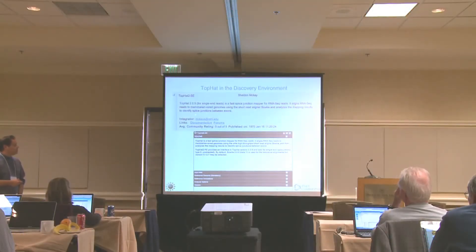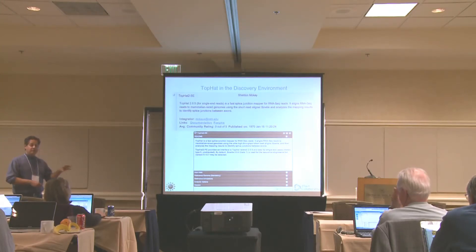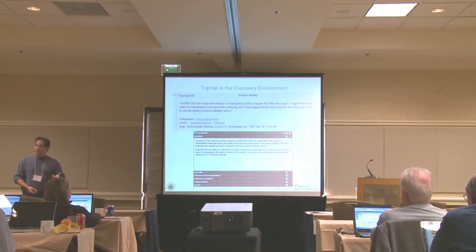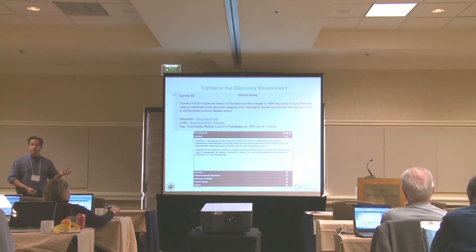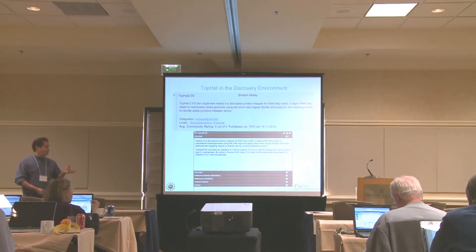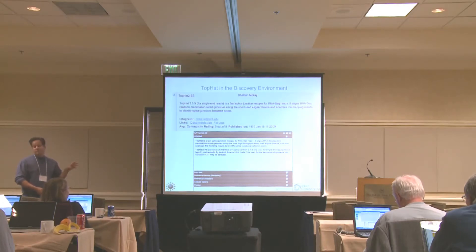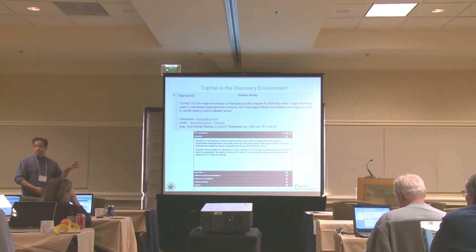It uses Bowtie, and the real trick here is it's an iterative aligner. First, it looks for reads that align to the genome. It's going to find some reads that don't align to the genome, and there are a couple of explanations for that. One is a low quality read with a lot of mistakes. Another is that it's not derived from the genome. And another is it's a sequence from the transcriptome.